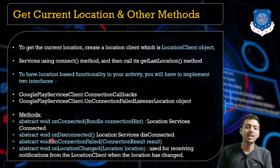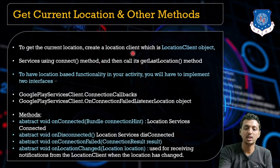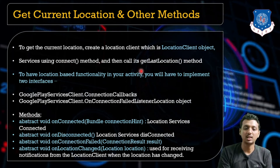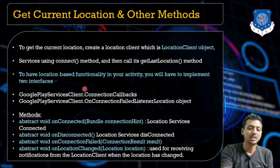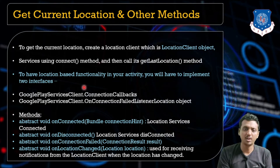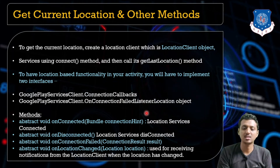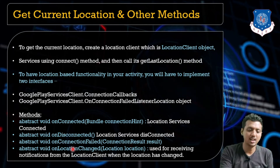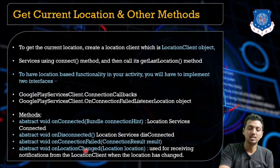Now, how can we get the current location? There are various methods. First, we need to create a location client object and then use the connect method, as well as getLastLocation() to call the particular method. Location updates can be implemented using two different interfaces: GooglePlayServicesClient.ConnectionCallbacks and OnConnectionFailedListener. Methods like onConnected(), onDisconnected(), onConnectionFailed(), and onLocationChanged() are used to fetch the location.